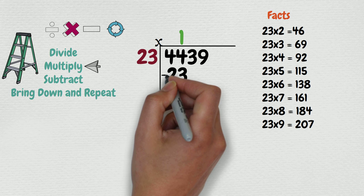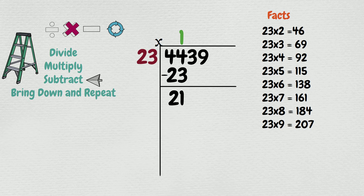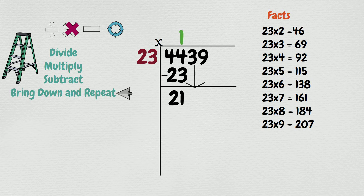Now we're going to follow our third step, which is to subtract: 44 minus 23 is 21. Our fourth step is to bring down the number, which is 3. So we have 213.